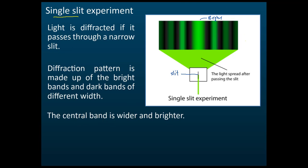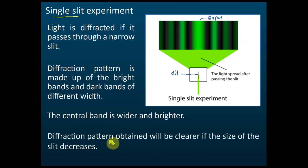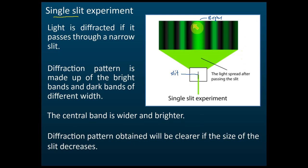The central band is wider and brighter — that's what you need to know. The diffraction pattern obtained will be clearer if the size of the slit decreases. If you use a smaller slit, you will get a clearer picture of the diffracted light, but the brightness will reduce. The band will be clearer but dimmer.